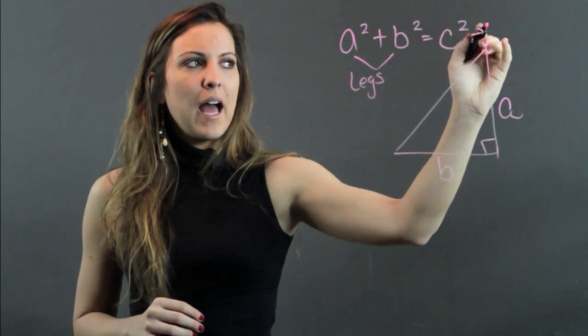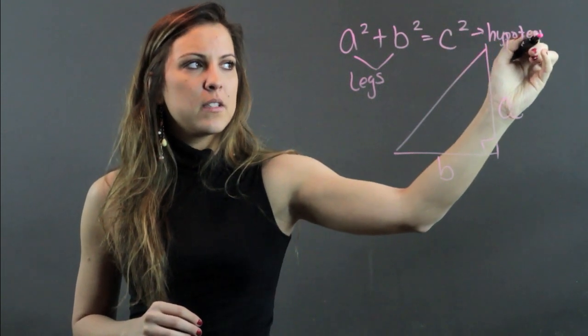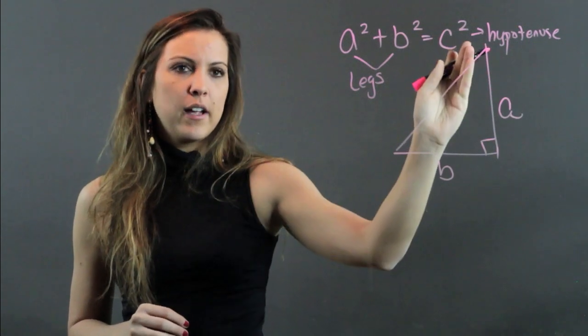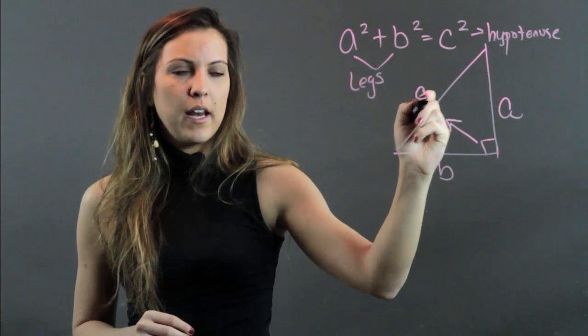C is called my hypotenuse and there's two ways to remember the hypotenuse that you need to know both of them. One is that it's always going to be the longest side of the right triangle, and two is that it's always going to be across from the right angle.